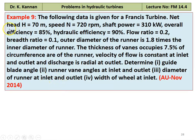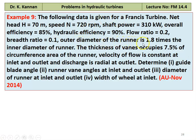Example number 9 from November 2014 question paper. The following data are given for a Francis turbine: net head 70 meter, speed 720 RPM, shaft power 310 kilowatt, overall efficiency 85%, hydraulic efficiency 90%, flow ratio 0.2, breadth ratio 0.1. Outer diameter of the runner is 1.8 times the inner diameter of the runner. Thickness of the vane occupies 7.5% of circumference area of the runner. Velocity of the flow is constant at the inlet and the outlet. Discharge is radial at the outlet. Determine guide blade angle, runner vane angle at the inlet and outlet, diameter of the runner at the inlet and the outlet, and width of the wheel at the inlet.